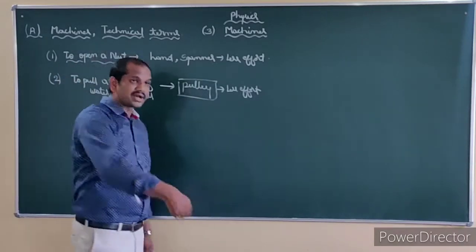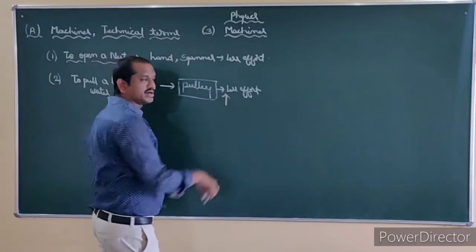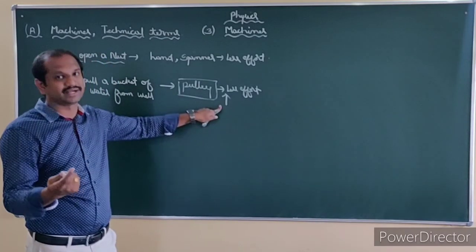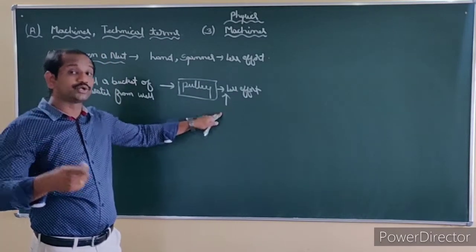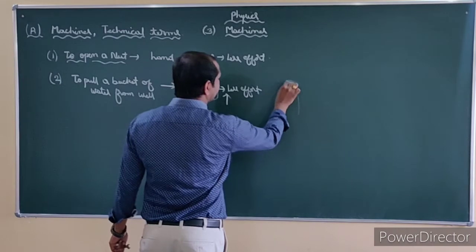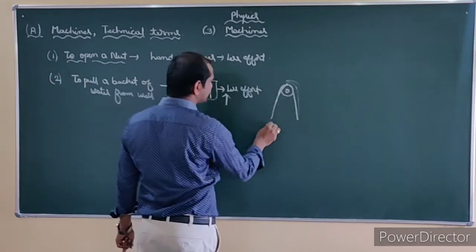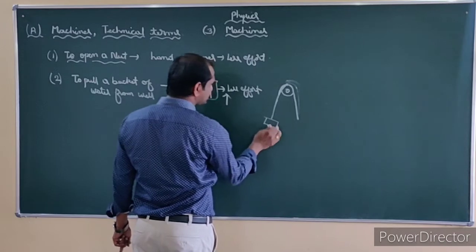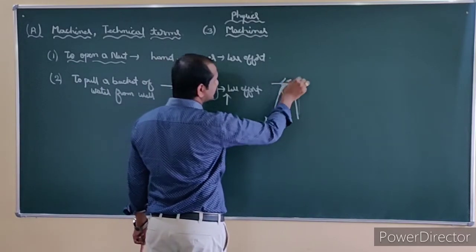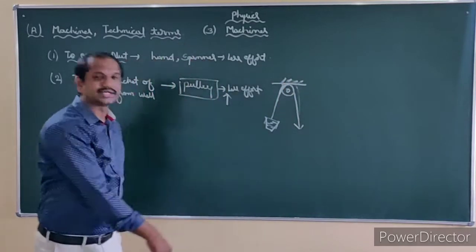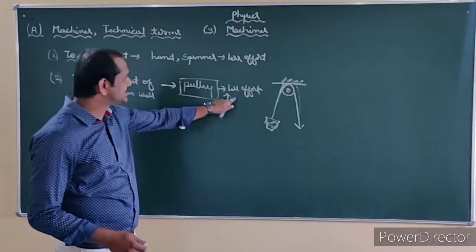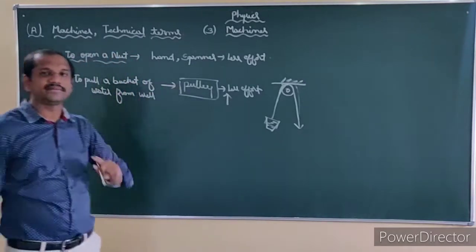Direction is also important. When you are lifting a bucket of water upwards, you are doing work against the force of gravity. But consider using a pulley. The bucket of water is attached here; you are pulling in a downward direction. You are not applying force against the force of gravity. So with less effort, you can pull a bucket of water from the well.